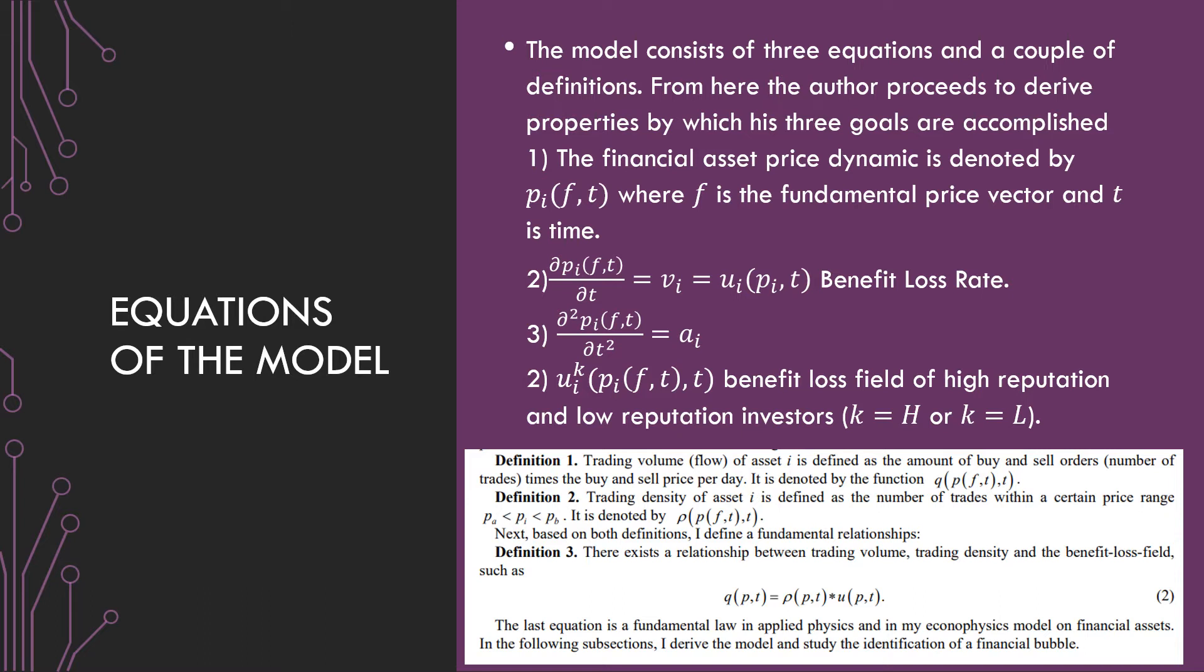The third point is that the second derivative, this is a very physics type of approach because he's thinking of this as the classical definitions of derivatives of velocity and acceleration. But I guess AI here is the acceleration of that price. And this UIK, this benefit loss field, which is from this second point, it's going to be defined with reference to high reputation and low reputation investors, where K here is going to be equal to H or L to denote those two different types of investors.